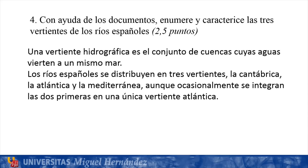We finish with the theoretical question, number 4. It asks us, with the help of the documents, to enumerate and characterize the three watersheds of Spanish rivers, worth two and a half points. We begin by defining that a hydrographic watershed is the set of basins whose waters drain into the same sea. The rivers of Spain are distributed in three watersheds: the Cantabrian, the Atlantic, and the Mediterranean.